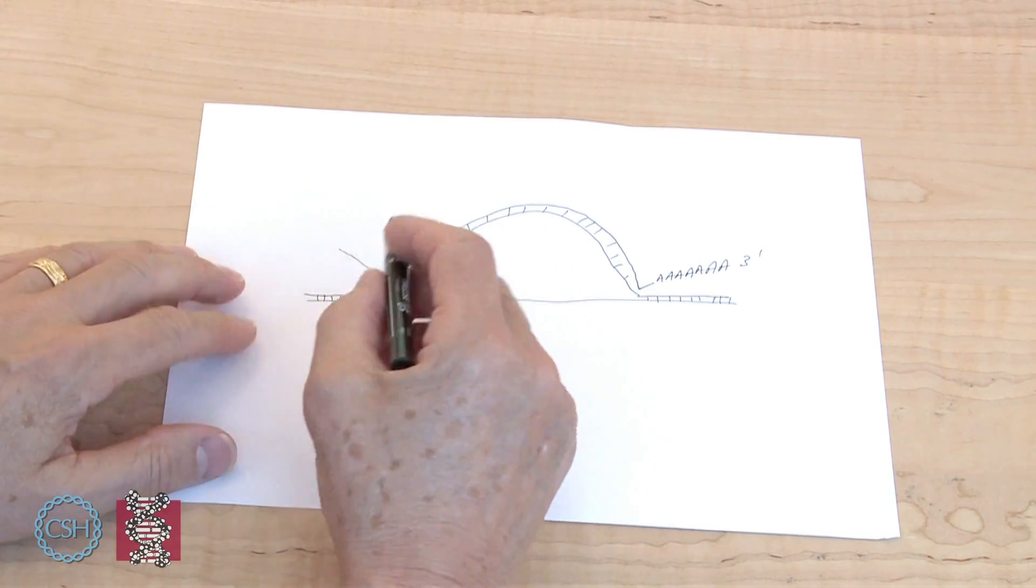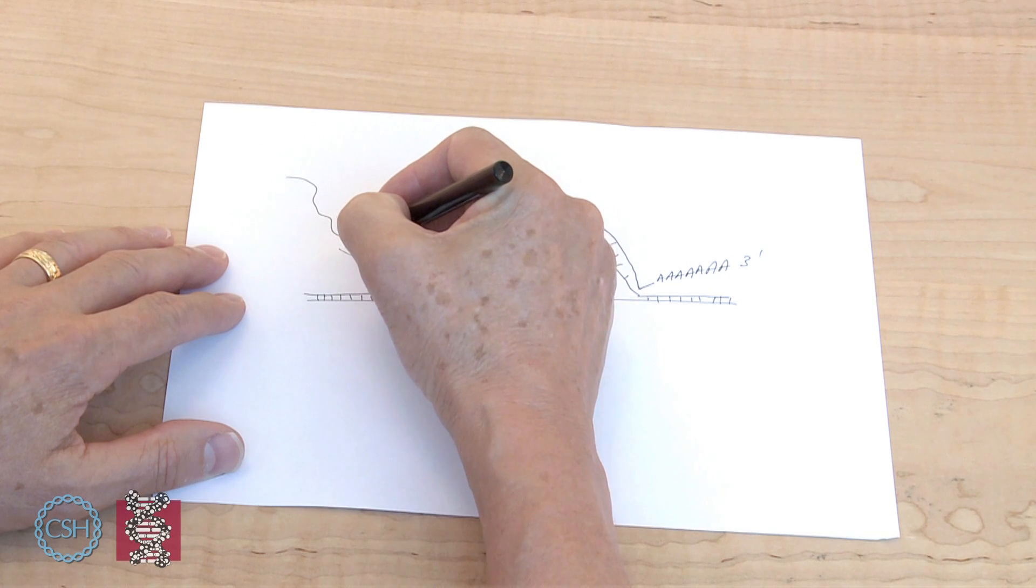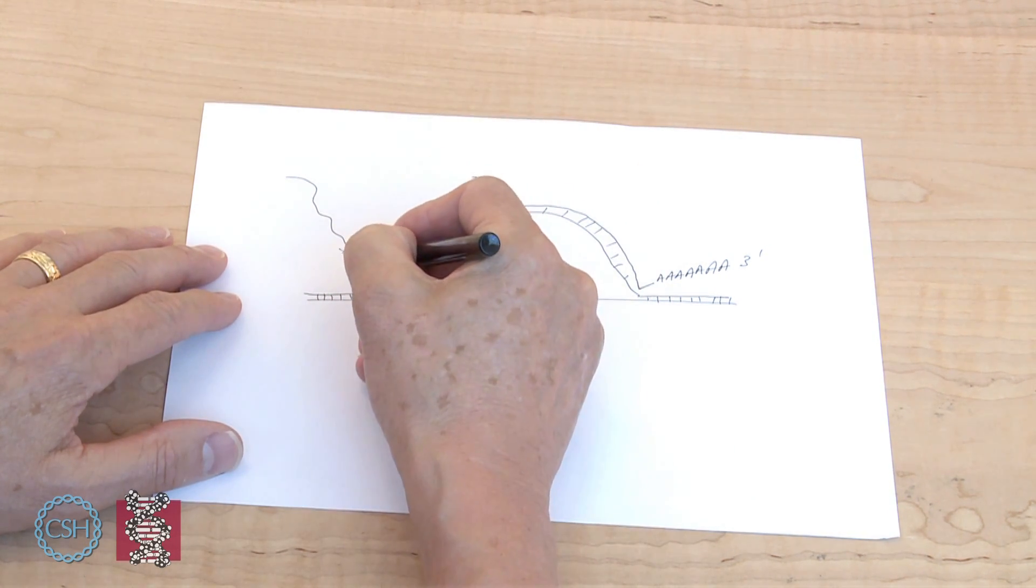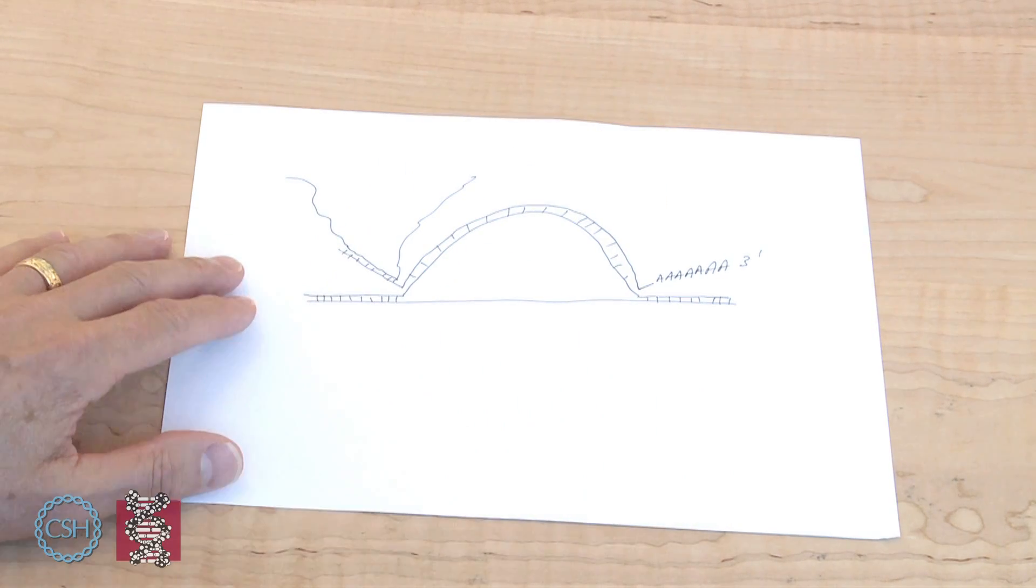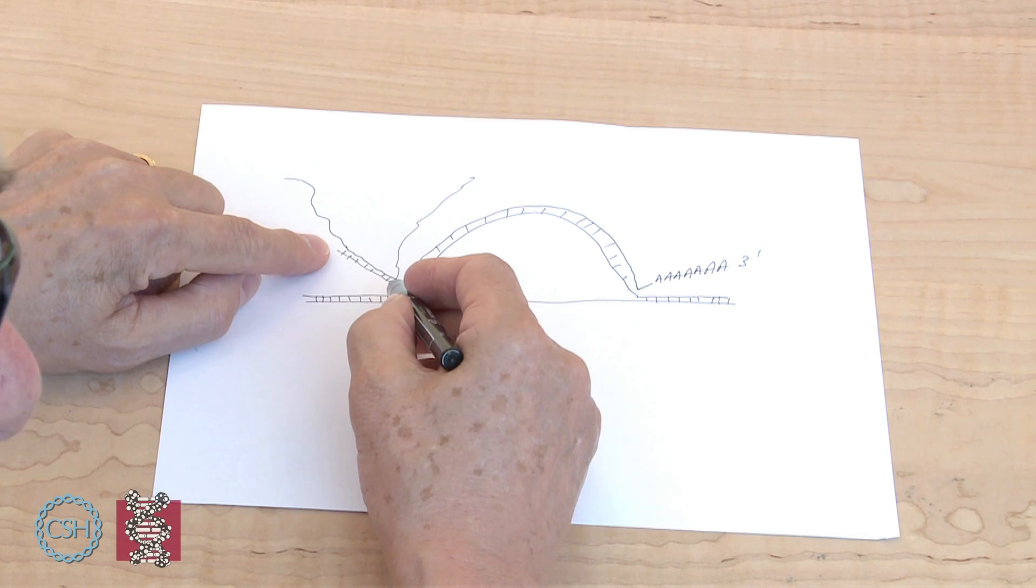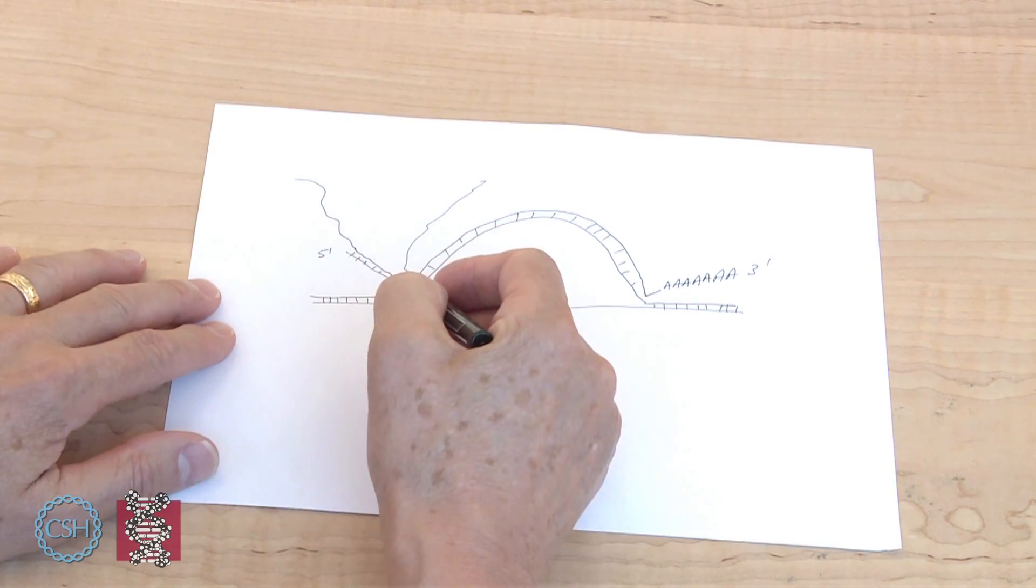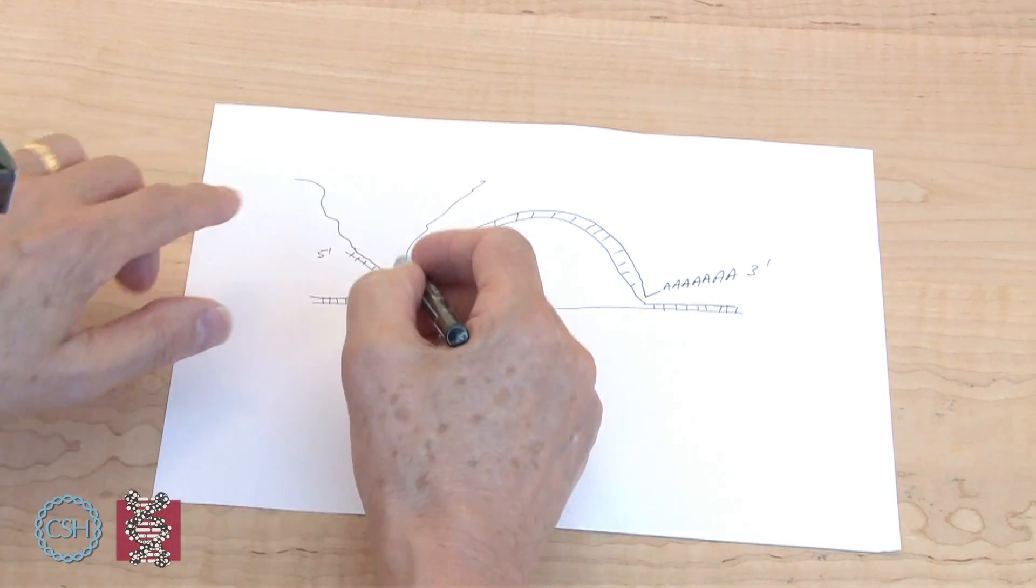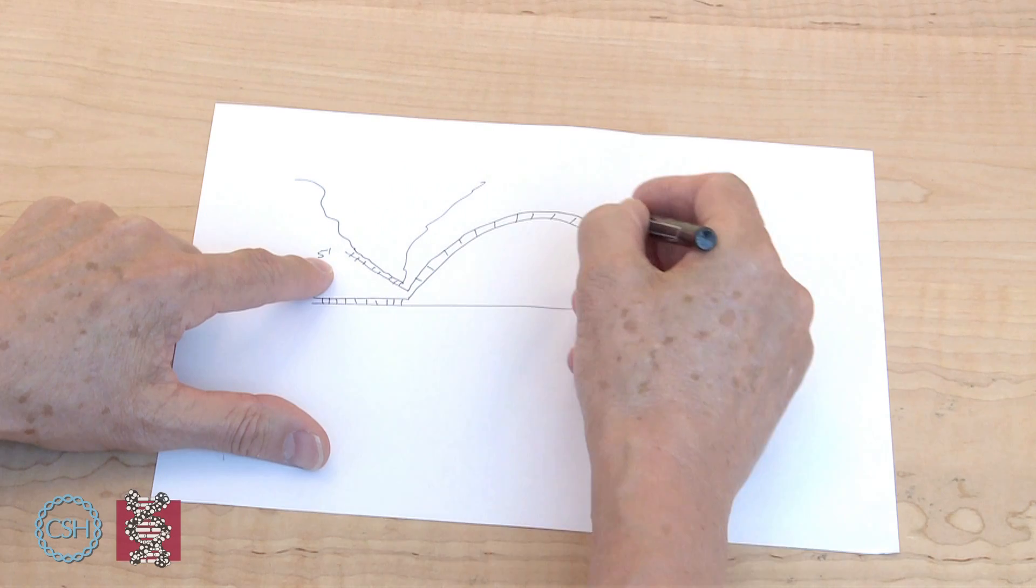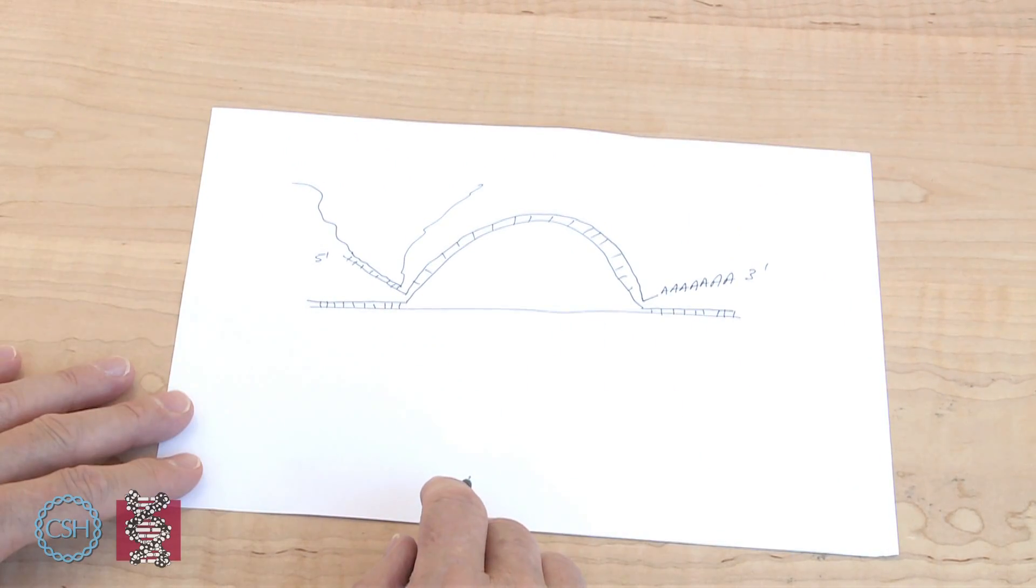And so what we did was to make a single-stranded piece of DNA that would hybridize specifically to this. And so the idea is that this would tell us that there was this extra piece of RNA at the 5' end of the messenger RNA, that is at the start of the messenger RNA. And this I envisioned was the primer that somehow became joined to this in order to make the messages and to provide the signals we were seeing.